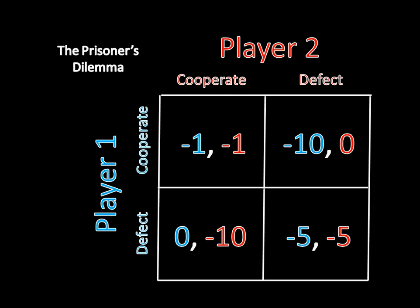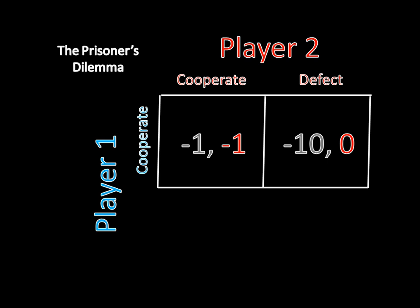Now let's look at player two's options. Imagine player one cooperated. As we saw with player one last time, player two's best response is to defect here, as no time in jail is better for her than one year is.